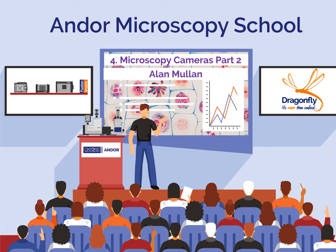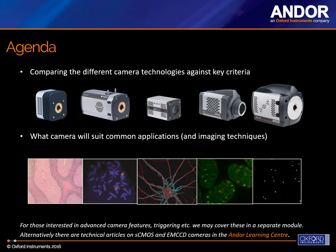Hello, I am Dr. Alan Mullen, a product specialist for microscopy cameras at Andor, and I'd like to welcome you to lesson four in the Andor Microscopy School. This is the second of two lessons about microscopy cameras and the role they play within microscopy imaging. In the previous module about cameras, we looked at what types of different camera technologies there were and the important parameters from a camera's perspective to do with imaging — sensitivity, field of view, and speed. In this module, we're going to compare those different camera technologies using those parameters and work out what cameras are more likely to be suitable for different applications.